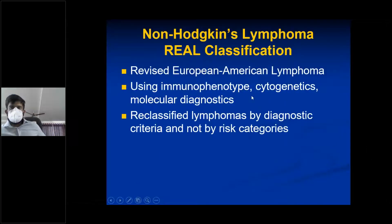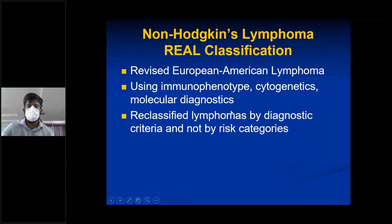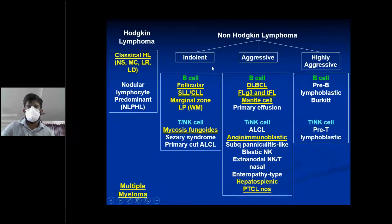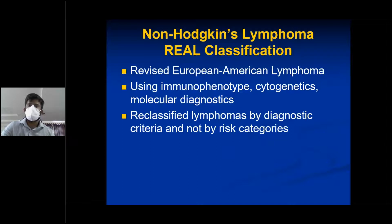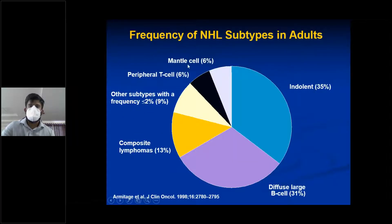The REAL classification is the Revised European-American classification using immunophenotype, cytogenetics, and molecular diagnostics. It reclassifies lymphomas by diagnostic criteria and not by risk categories. The risk category classification uses indolent, aggressive, and highly aggressive groupings.